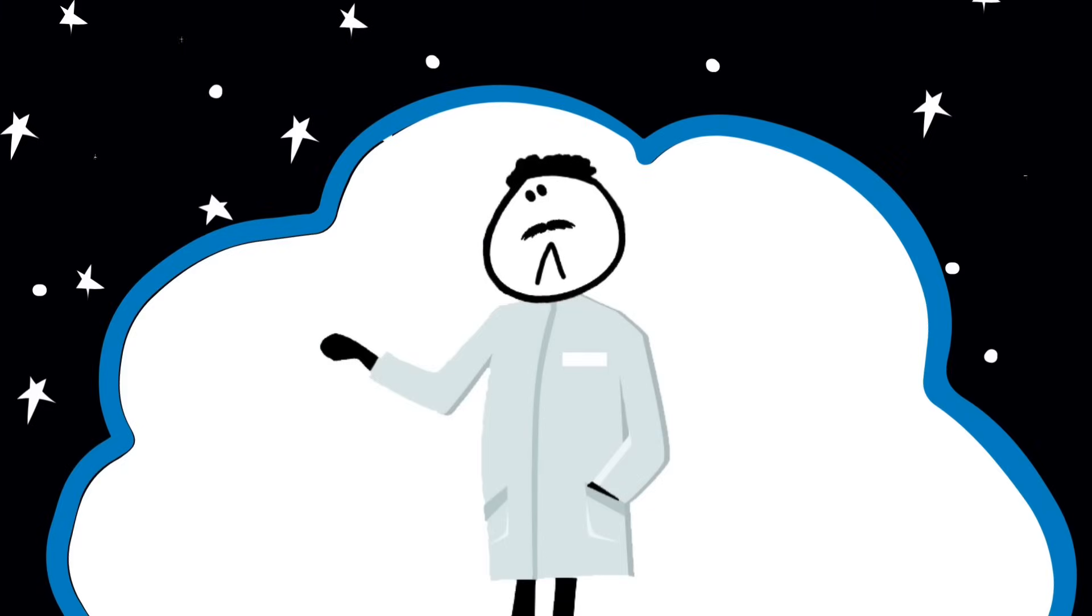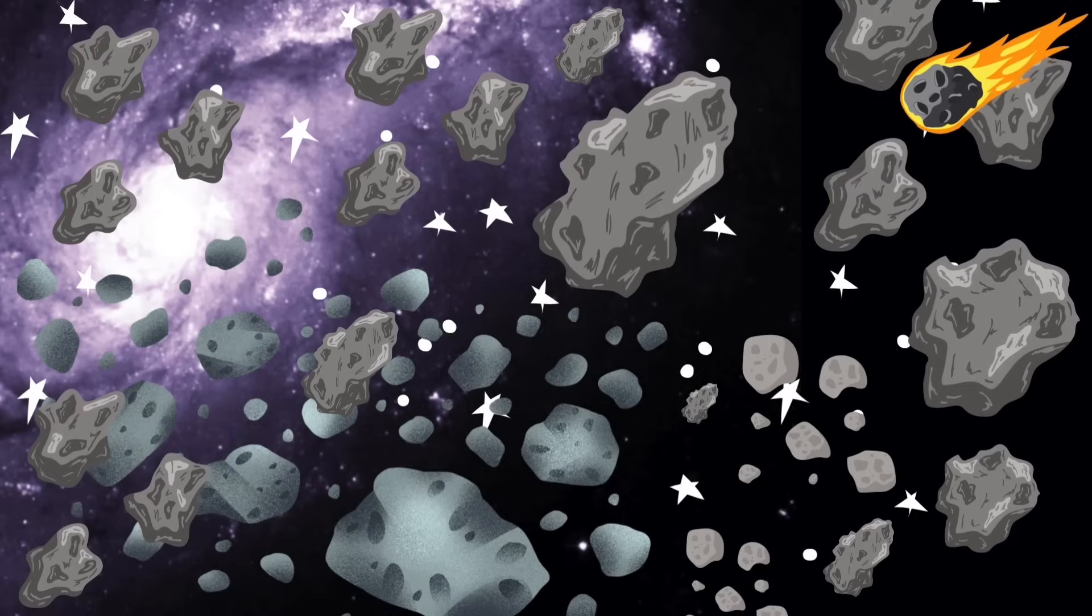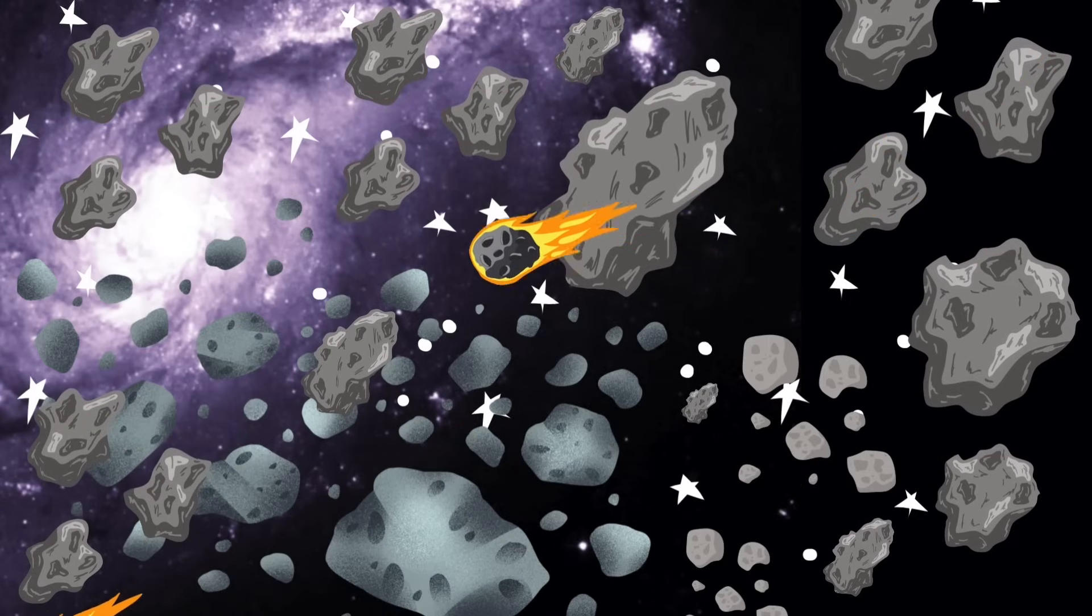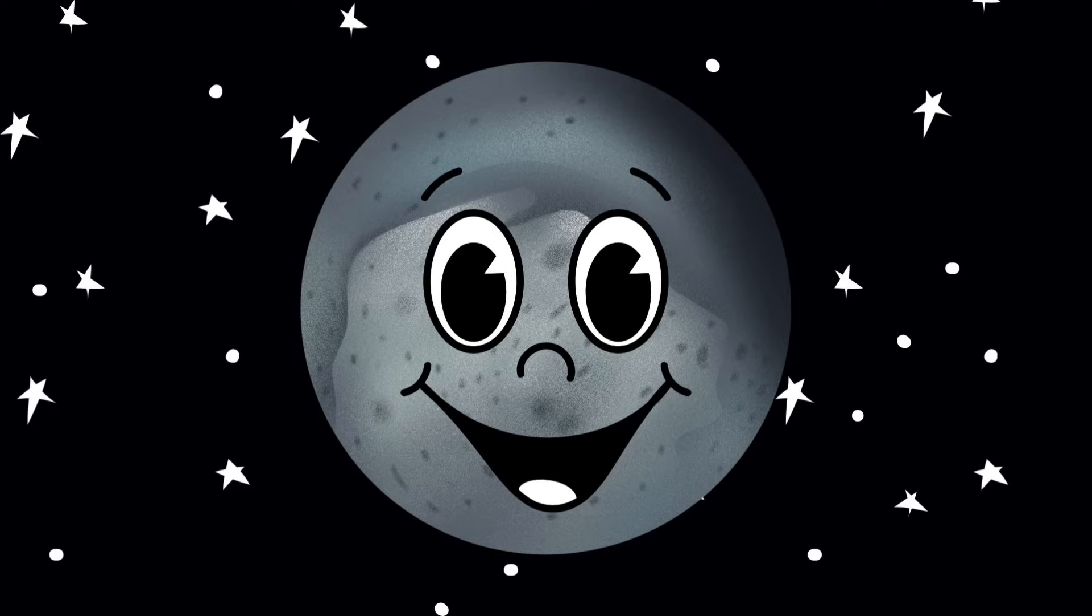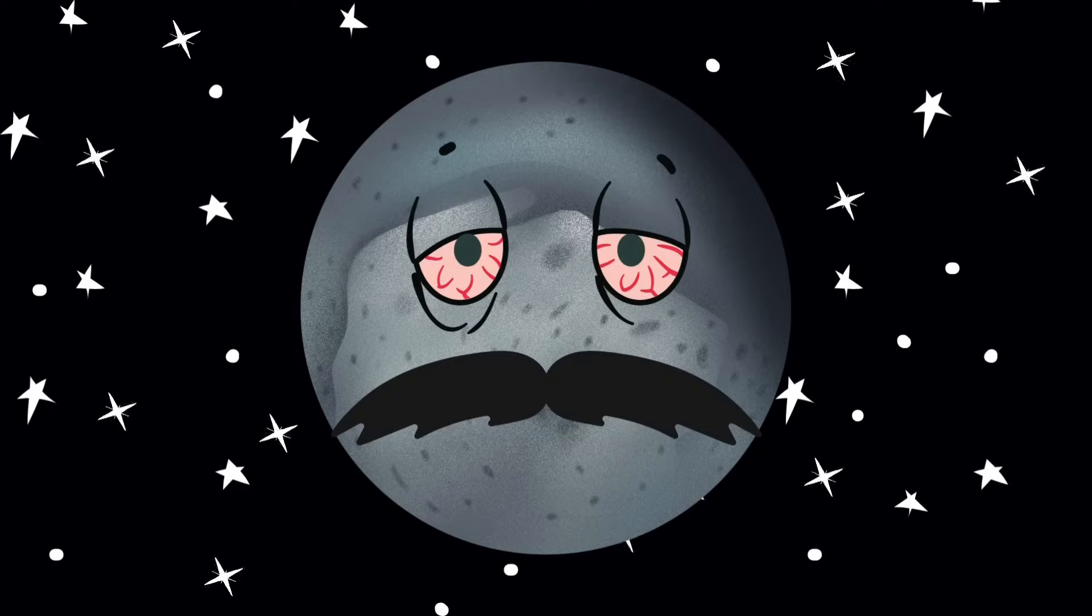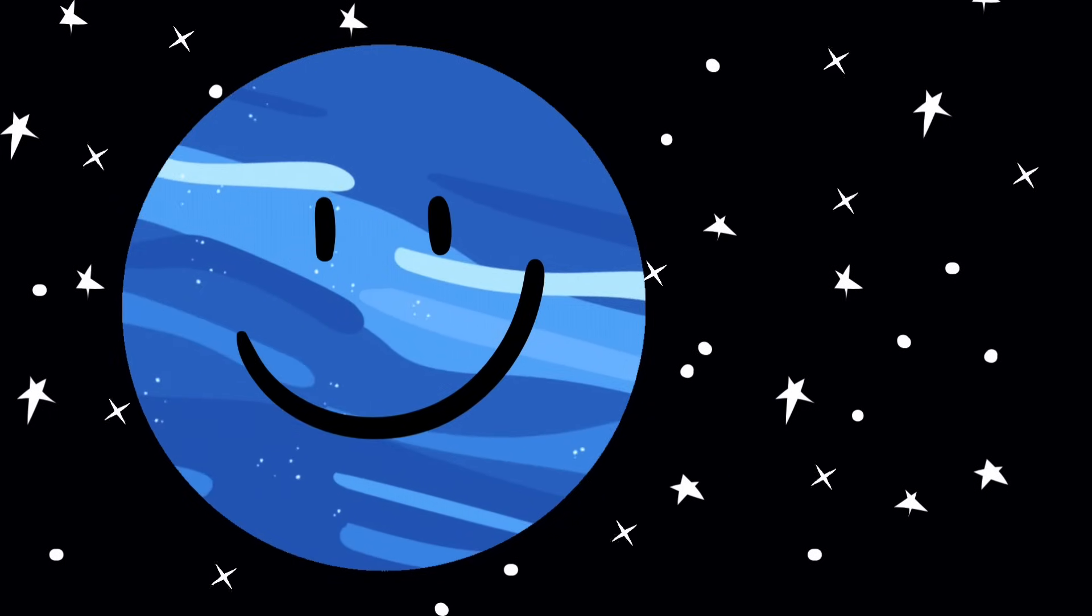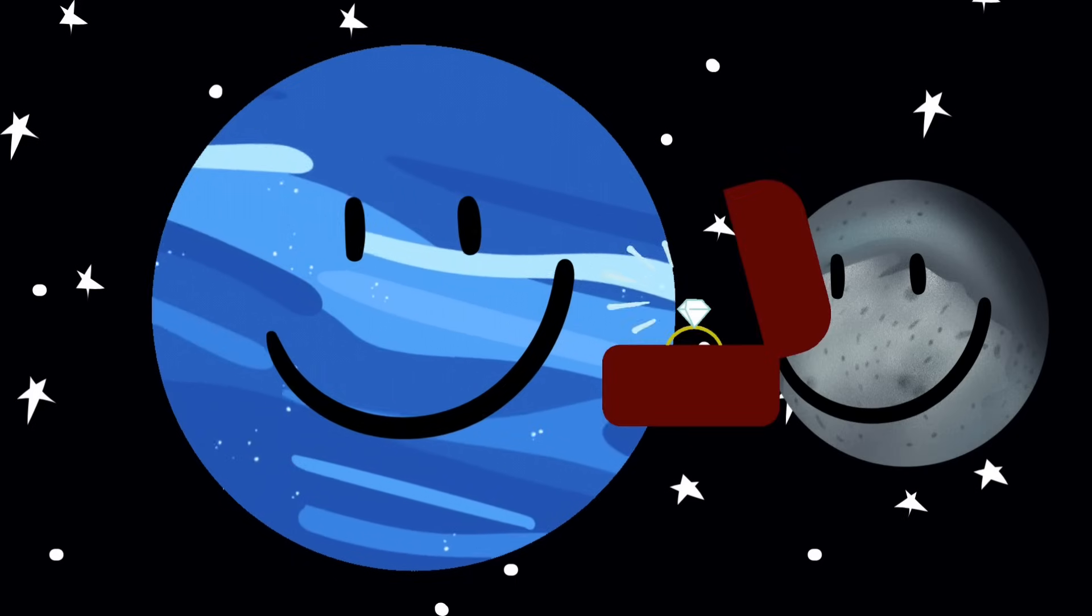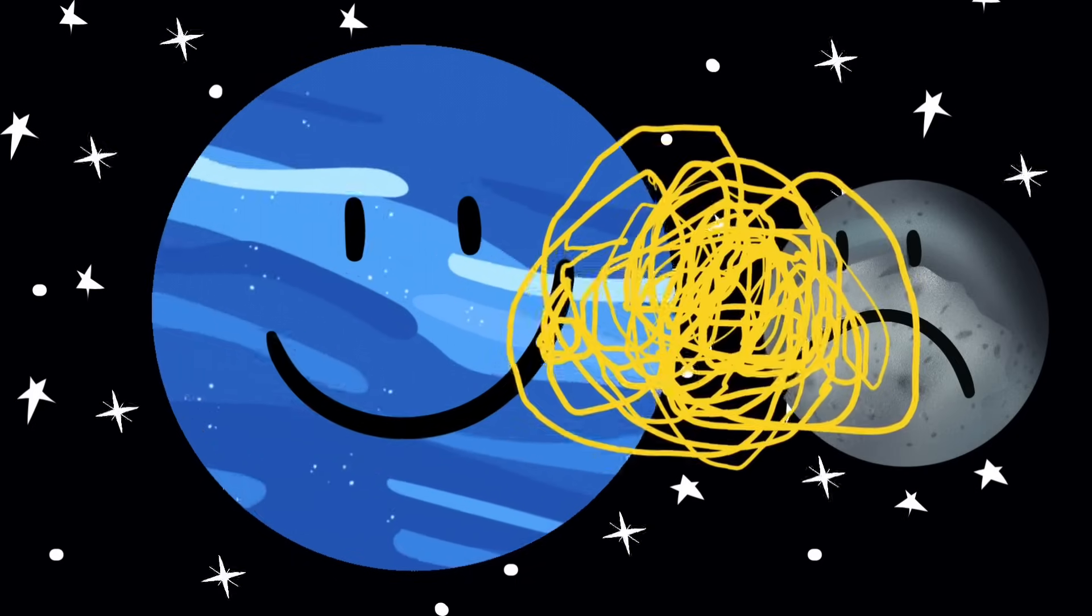Scientists believe Triton is a kidnapped object from the Kuiper Belt, which makes it the space version of adopting a wild child and hoping it fits in. Triton's not staying forever. Eventually, it'll crash into Neptune or break apart and form a ring, which is either a breakup or an engagement. Either way, it's complicated.